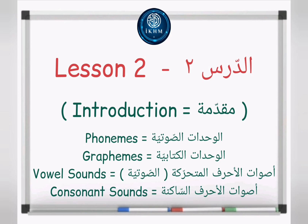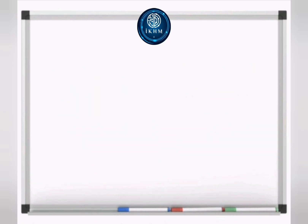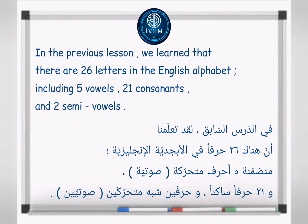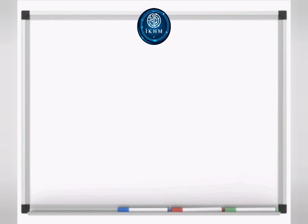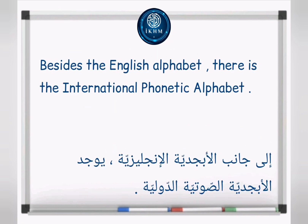Lesson two introduction: phonemes, graphemes, vowel sounds, and consonant sounds. In the previous lesson we learned that there are 26 letters in the English alphabet, including five vowels, 21 consonants, and two semi-vowels.